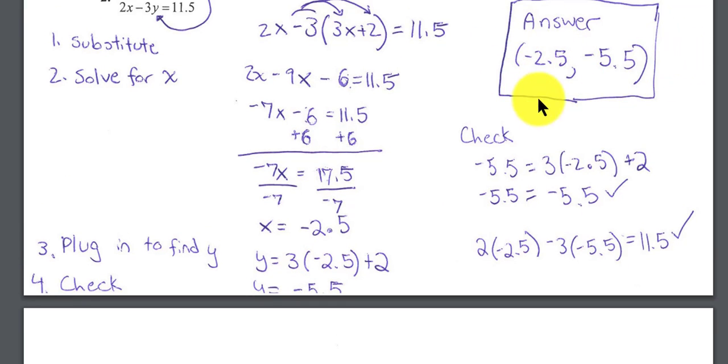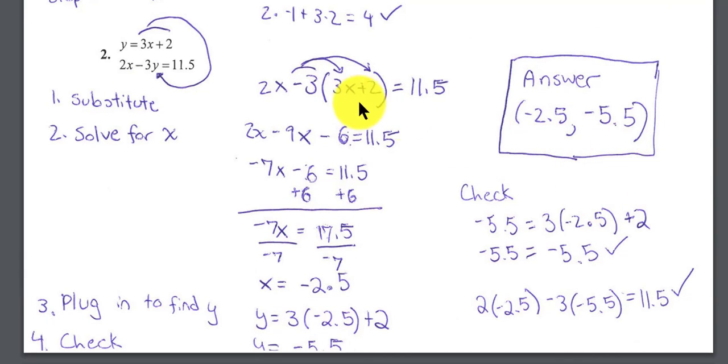So this is my ordered pair, and the check would be simply to replace the y with the negative 5.5 and the x with the negative 2.5, and you end up with negative 5.5 equals negative 5.5. So the second problem was done via substitution.